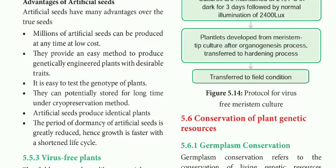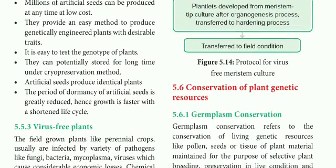Artificial seeds produce identical plants. If we need a parent plant, we make that plant from artificial seeds to form the required varieties. Growth is faster with a shortened life cycle. Hence, identical plants can be isolated and reproduced efficiently.